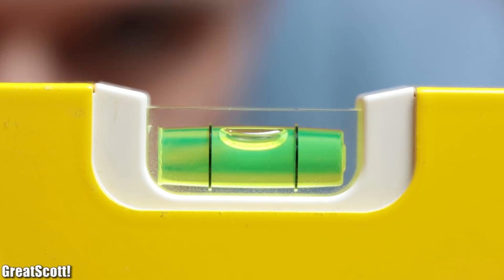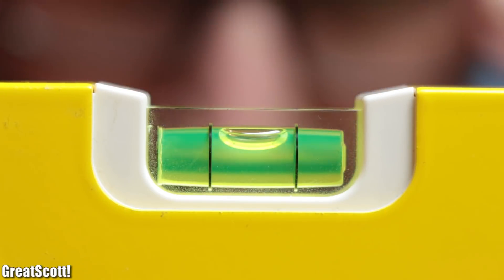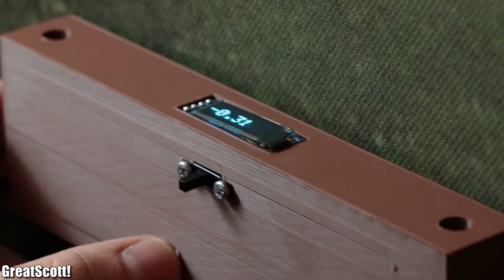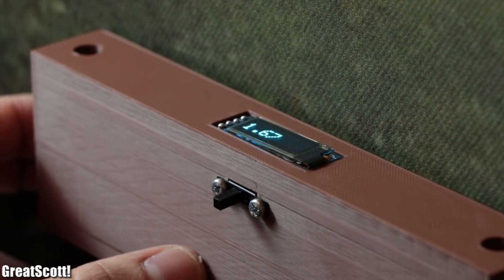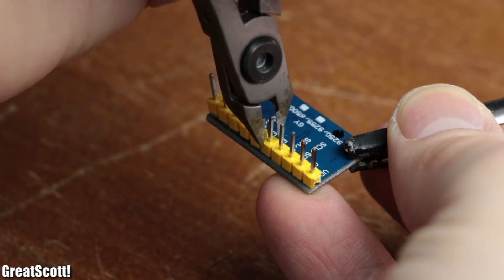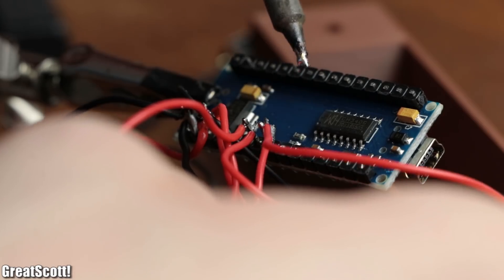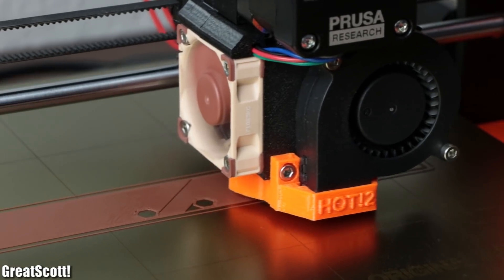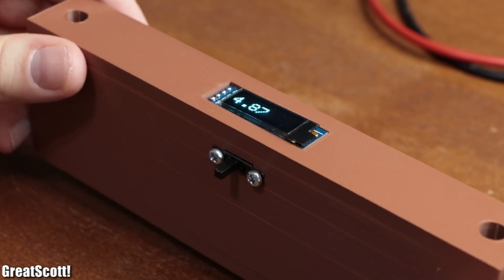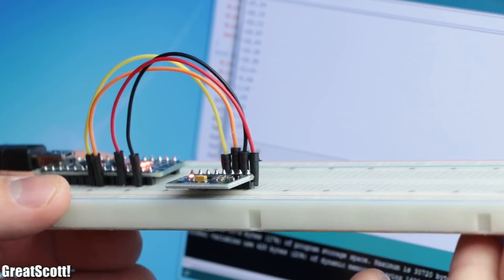But what always bothered me is the kind of poor precision of such an air bubble eyeball technique. So in this small project, in order to counteract this problem, we will have a closer look at accelerometer ICs in order to combine one of them with a couple of complementary components and a 3D printed enclosure to create our own battery-powered digital spirit level. Let's get started.